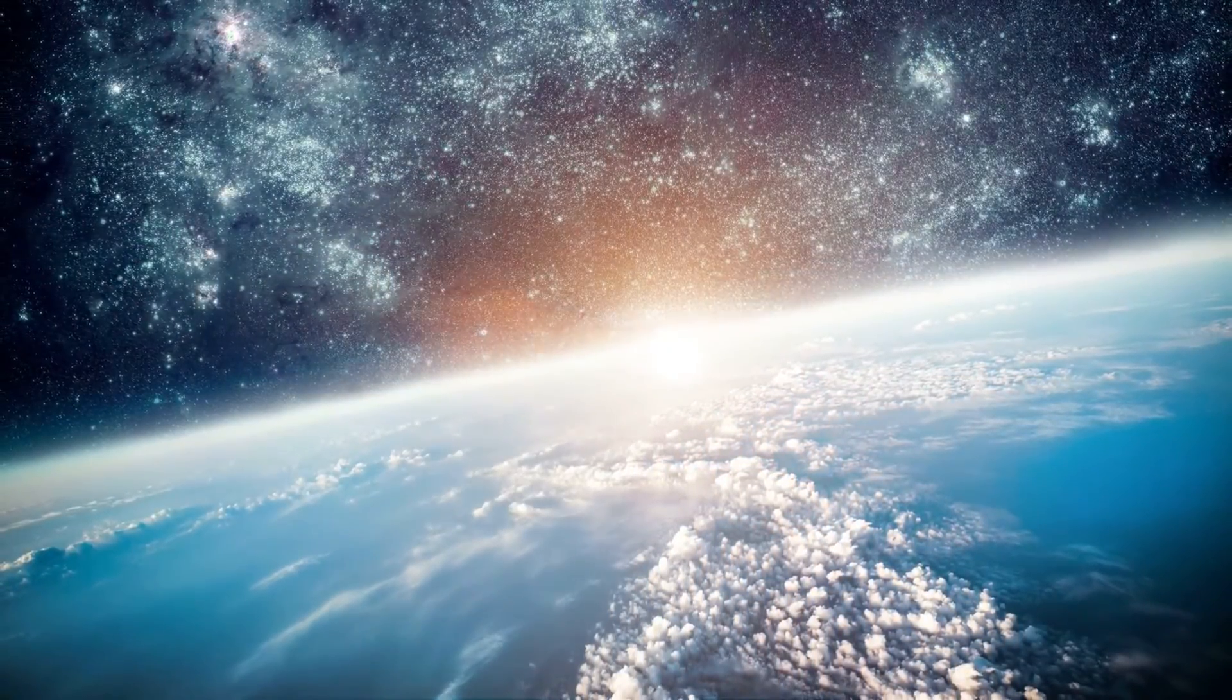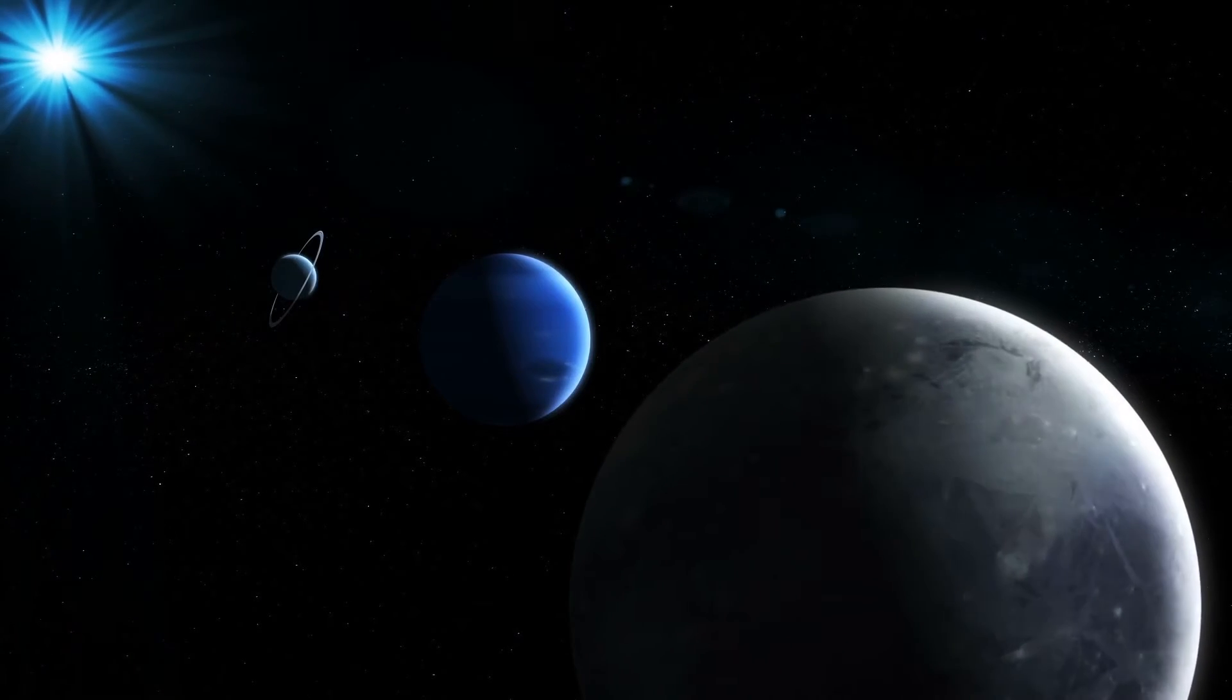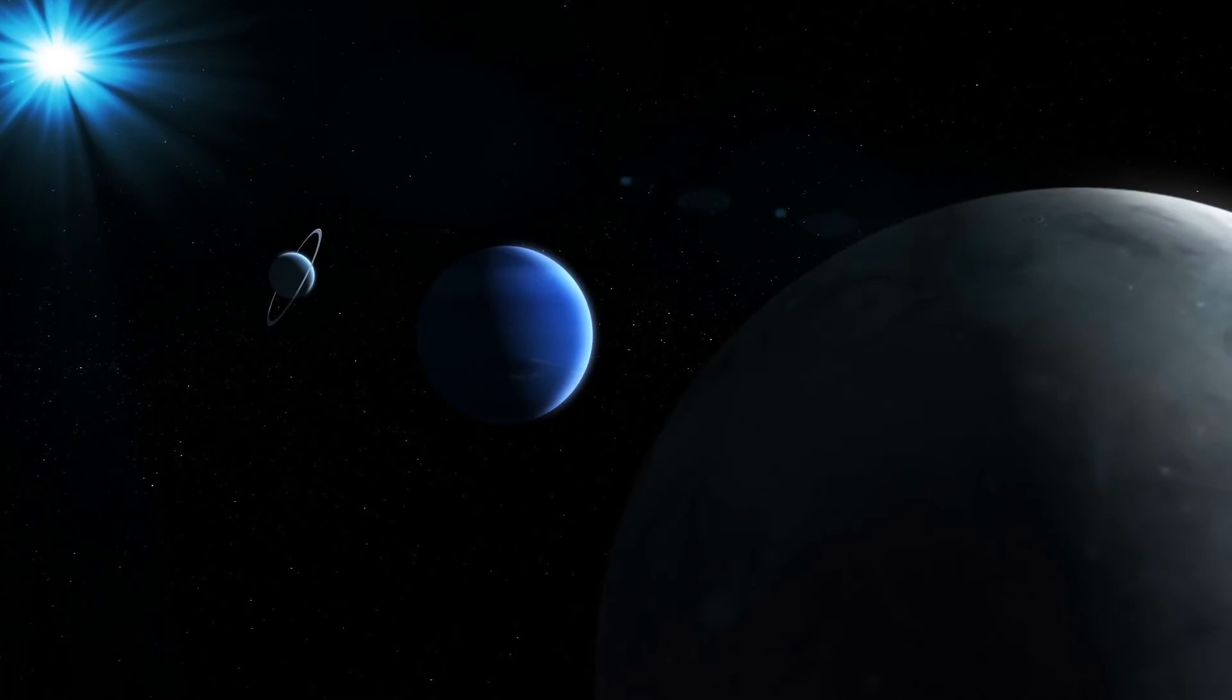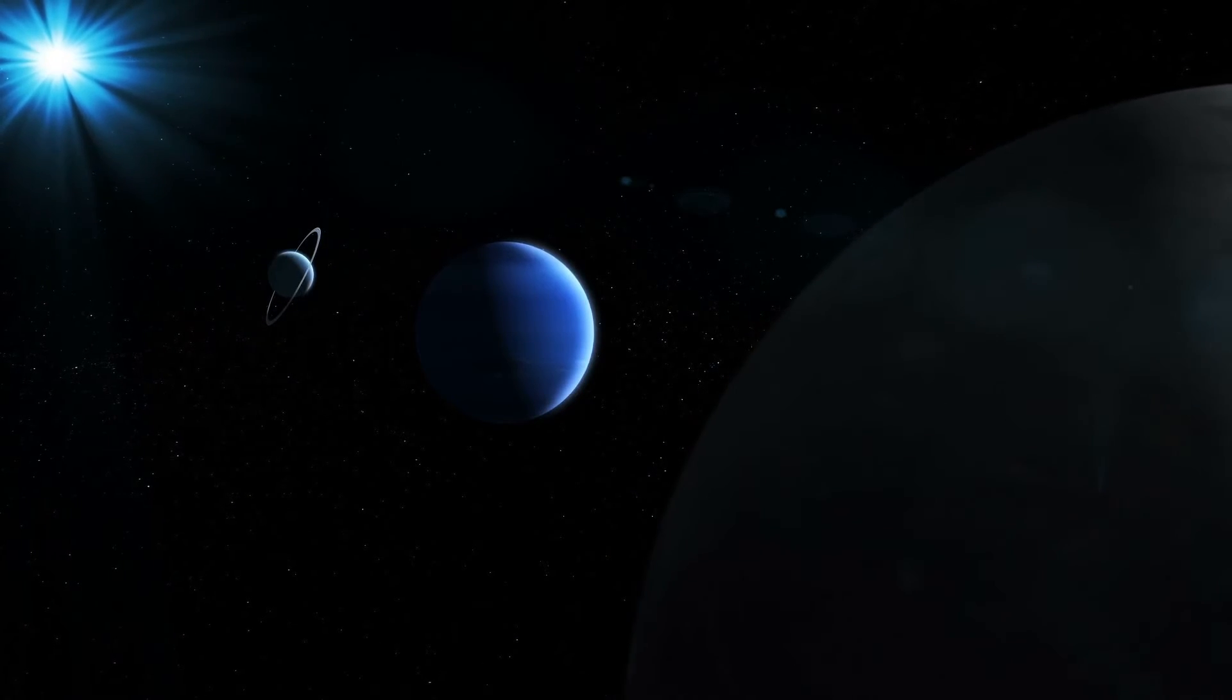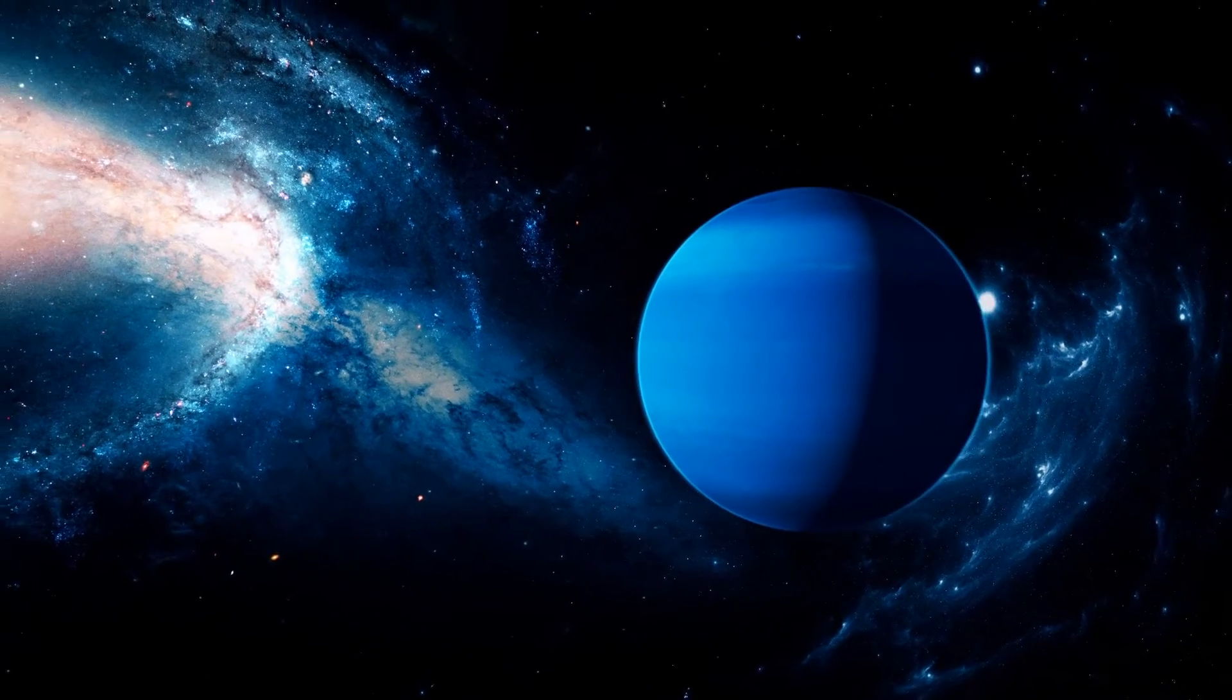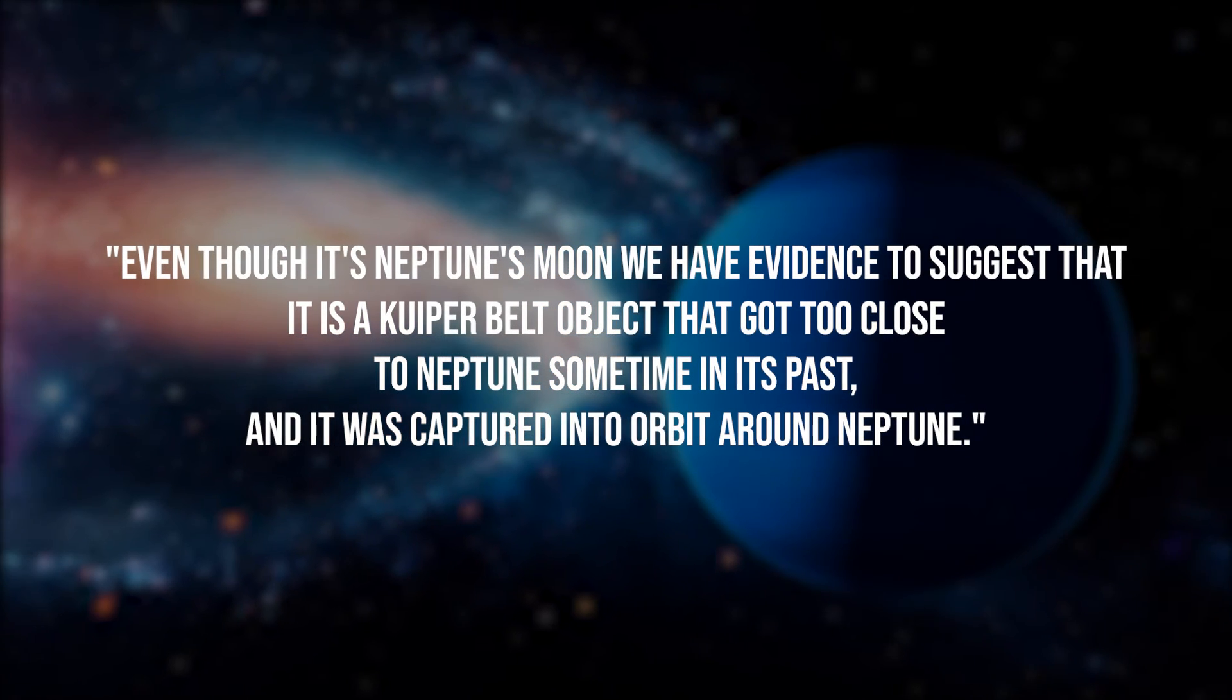The James Webb Space Telescope will also study objects known as centaurs—former Kuiper Belt Objects whose orbits have been altered so that they're pulled closer to the Sun, settling somewhere between Jupiter and Neptune. One such object is Neptune's moon Triton.